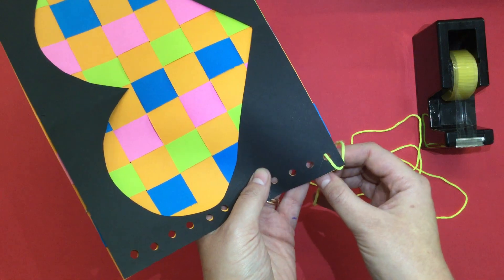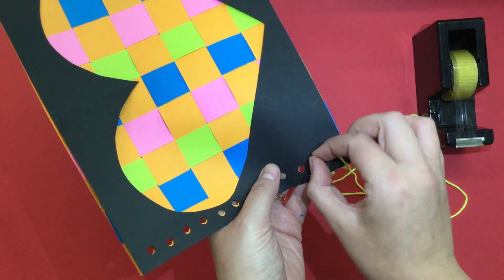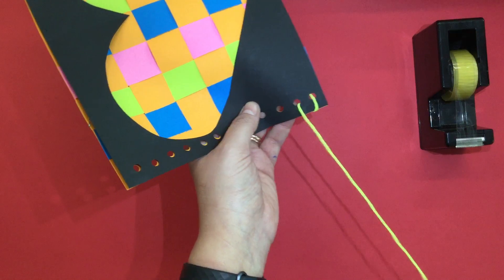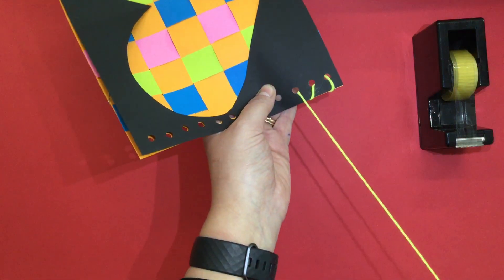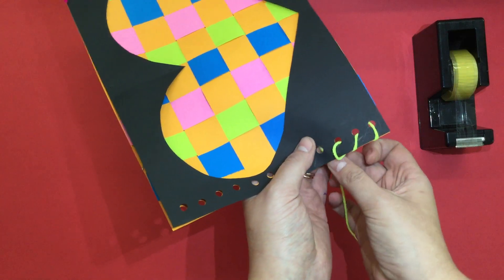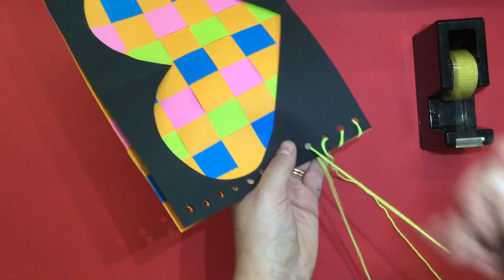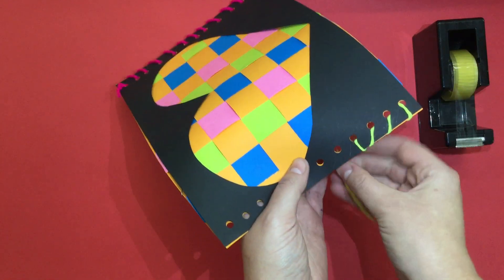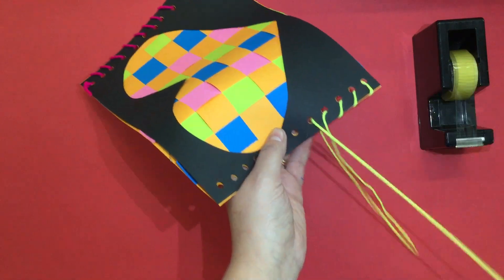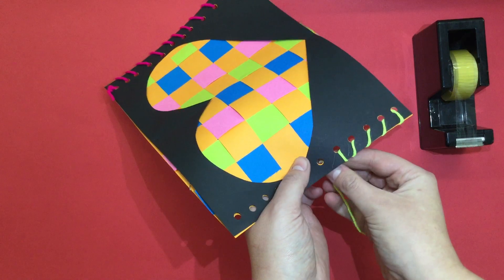Then I'm going to take my string and again poke it from the bottom up, pull your string all the way through, and continue this all the way to the other side. Bottom to the black side, pull all the way through. Bottom, bottom.